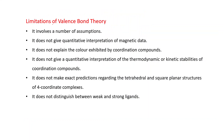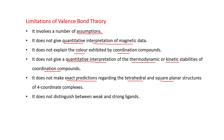Limitations of valence bond theory: it involves a number of assumptions; it does not give a quantitative interpretation of magnetic data; it does not explain the color exhibited by coordination compounds; it does not give a quantitative interpretation of the thermodynamic or kinetic stabilities of coordination compounds; it does not make exact predictions regarding tetrahedral versus square planar structures of four-coordinate complexes; and it does not distinguish between weak and strong ligands.